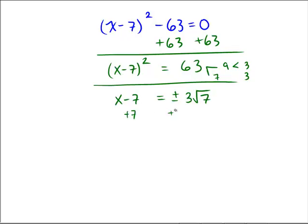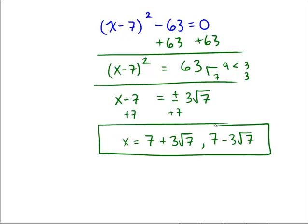And then if we just add 7 to both sides, looks like we're getting x = 7 + 3√7, and also 7 - 3√7. And those would be the two solutions to this quadratic.